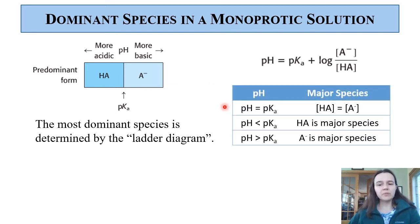To summarize, when pH equals pKa, HA equals A-. When pH is less, then the acidic form is the major species. When the pH is more or more basic, A- is the major species.